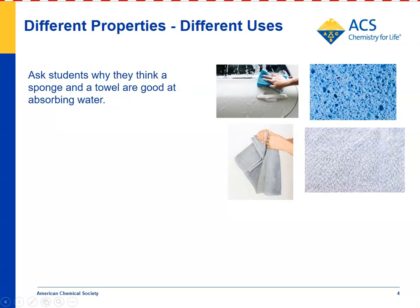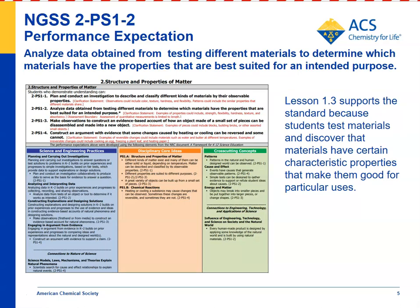For NGSS Standard 2-PS1-2 — analyze data obtained from testing different materials to determine which materials have the properties best suited for an intended purpose — students test paper, plastic, felt, and aluminum foil and see which are most absorbent. They'll eventually combine the results from this test with what they've done in the strength test for the next lesson, where they'll design a boat that can hold the most pennies without sinking.